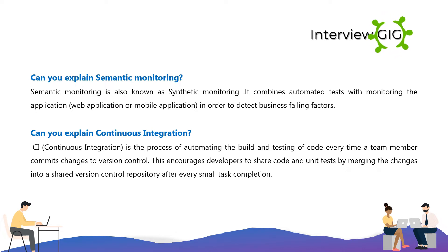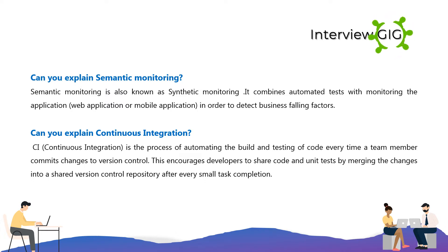Can you explain continuous integration? Continuous integration is the process of automating the build and testing of code every time a team member commits changes to version control. This encourages developers to share code and unit tests by merging changes into a shared version control repository after every small task completion.